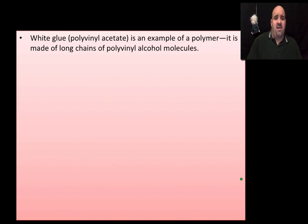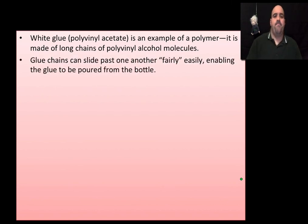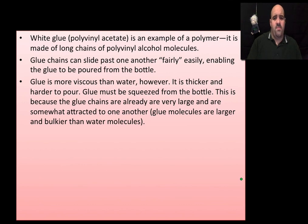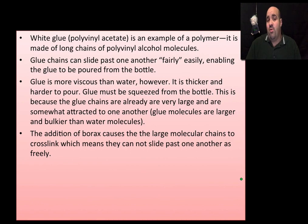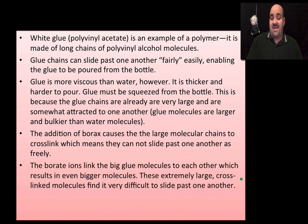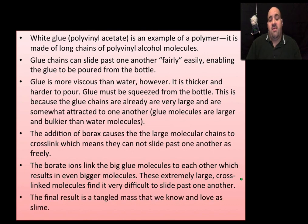So just to summarize, white glue, example of a polymer, long chains of polyvinyl alcohol, PVA. These glue chains can slide past one another. Think of like a tangled mess of spaghetti, and they can move around a little bit so the glue can be poured. Glue is more viscous than water because those chains of molecules are much thicker. The molecules are much bigger than the water molecules. Water molecules are small. They're able to move around and slide past one another easier. Glue has polymer chains in it, very long, very large molecules, but they can still move around a little bit. Once we cross-link them with borax, once we link those spaghetti chains together, once they stick together, the polymer chains are not going to slide past one another as easily. And essentially, the final result is a tangled mass that we know and love as slime.